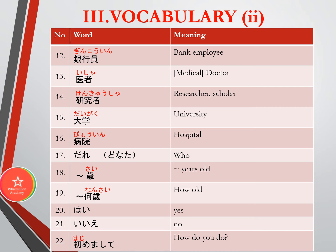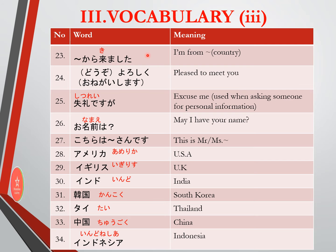Daigaku means university and byoin means hospital. Dare or donata means who. Nansai means how old, and to express age, put a number before sai. Hai means yes and iie means no. Hajimemashite means how do you do. Kara kimashita means I'm from — place noun plus kara kimashita. Douzo yoroshiku onegai shimasu means pleased to meet you. Shitsurei desu ga means excuse me, used when leaving a room or asking for personal information. Onamai wa or onamai wa nandesuka means may I have your name or what is your name.